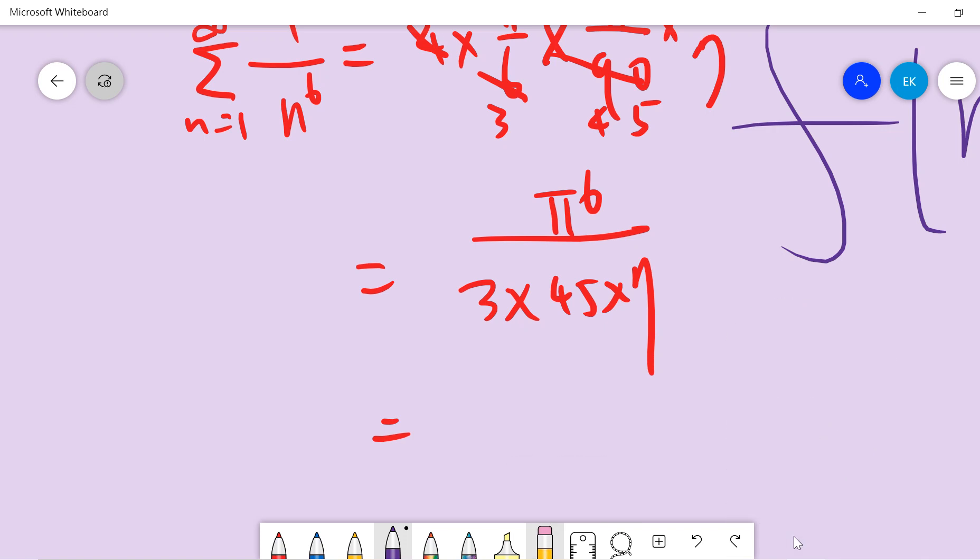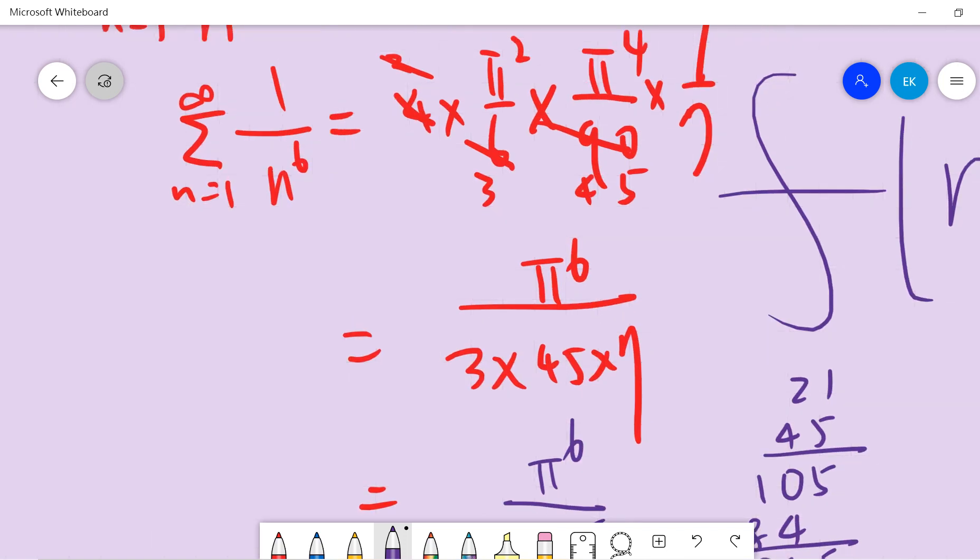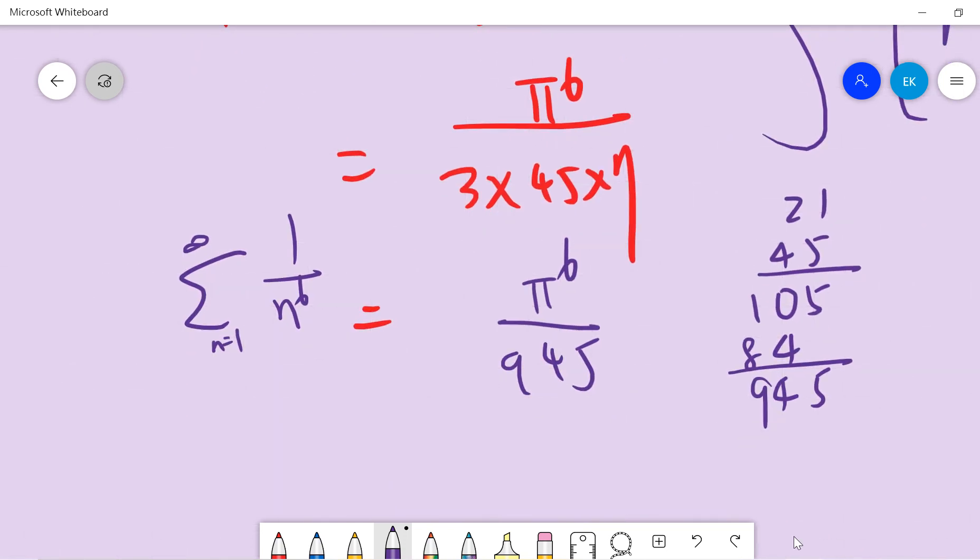Okay, so sorry, I missed it. So 5 times 4 is okay, so if you calculate carefully it's 945. So pi to the 6 over 945. Sorry for some mistake. So 1 over n to the 6 from 1 to infinity is pi to 6 over 945. So this is our first result. Basically using this method we don't have to use calculus and the entire expansion.